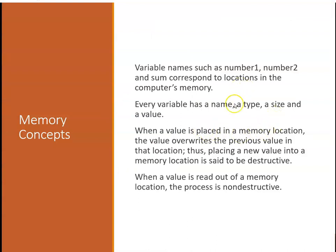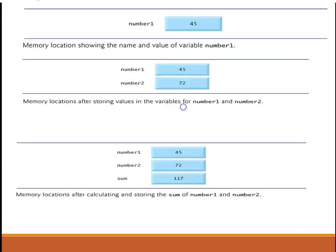Now let's talk a little bit about memory. Variable names such as number one, number two, and sum correspond to locations in the computer's memory. Every variable has a name, a type, a size, and a value. When a value is placed in a memory location, the value overwrites the previous value. Thus, placing a new value into a memory location is said to be destructive. When you read it out, it's non-destructive. One thing to keep in mind: if you don't initialize a variable, its value will be random garbage, and that's a fun thing to debug. Here are some examples: Our number one is a memory location with the value 45 in it. Here we have number one and number two having different values, 45 and 72. After we do our assignment and addition, we have sum with 117, which is the sum of the two.